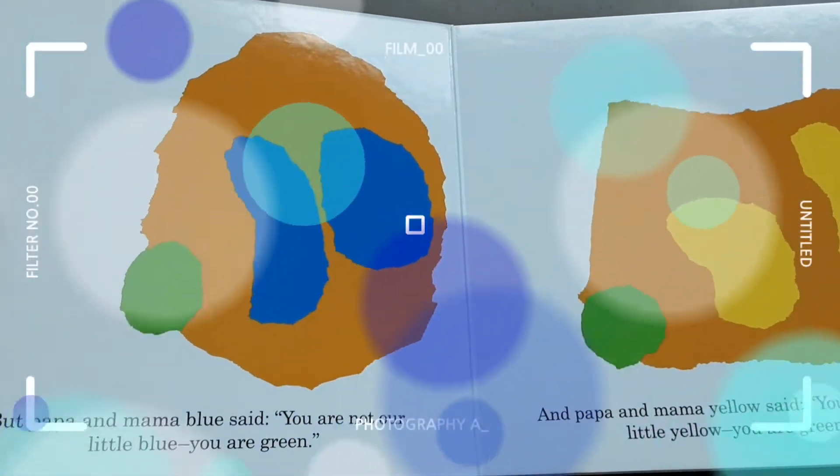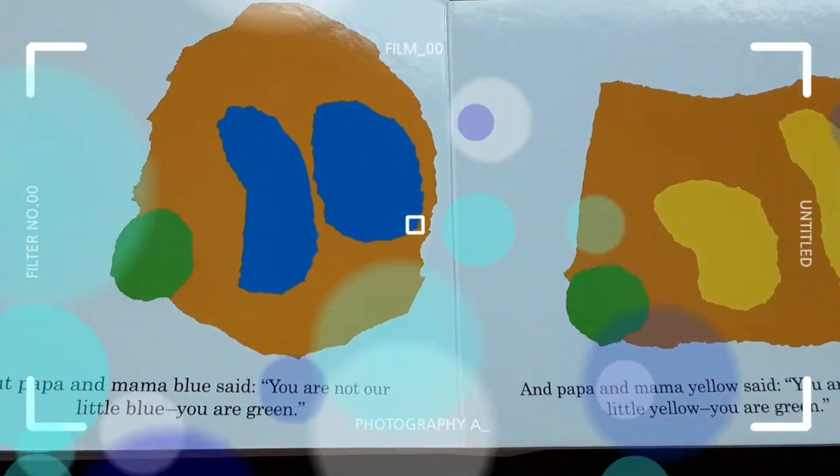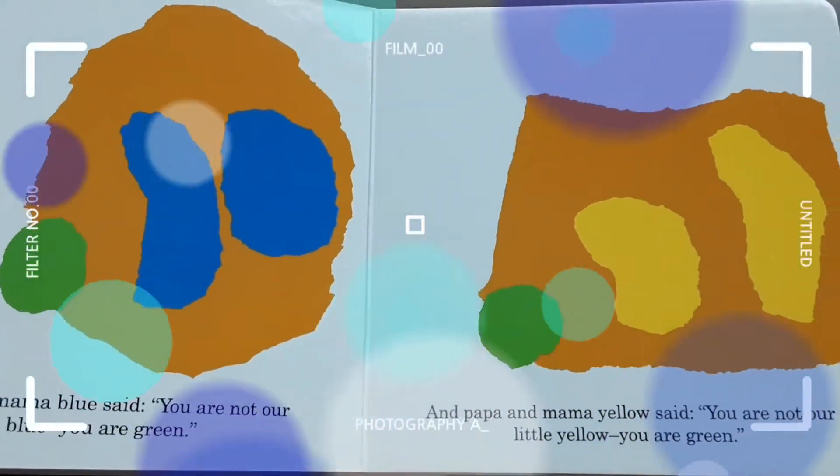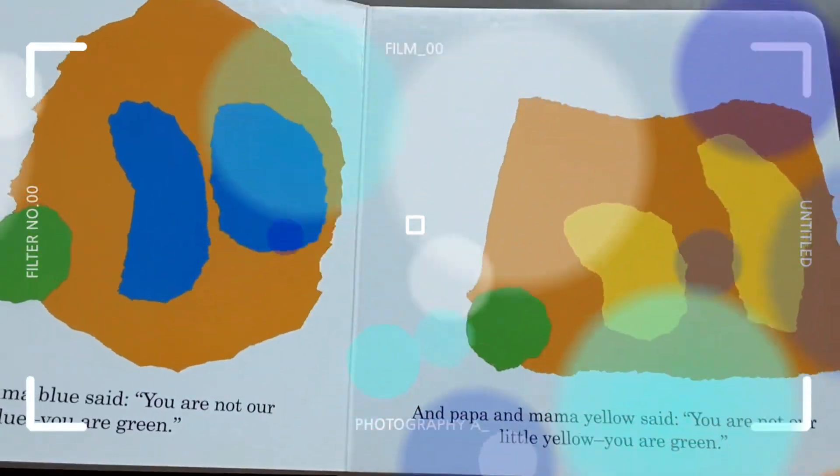But Papa and Mama Blue said, 'You are not our Little Blue. You are green.' And Papa and Mama Yellow said, 'You are not our Little Yellow. You are green.'